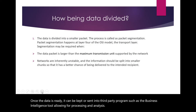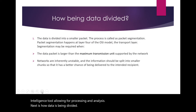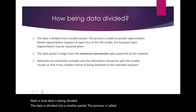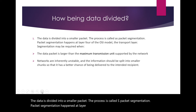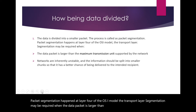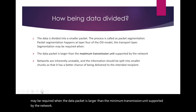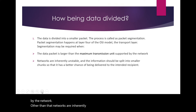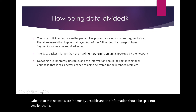Next is how data is being divided. The data is divided into smaller packets in a process called packet segmentation. Packet segmentation happens at layer 4 of the OSI model, the transport layer. Segmentation may be required when the data packet is larger than the minimum transmission unit supported by the network, or because networks are inherently unstable and information should be split into smaller chunks for a better chance of being delivered to the intended receiver.